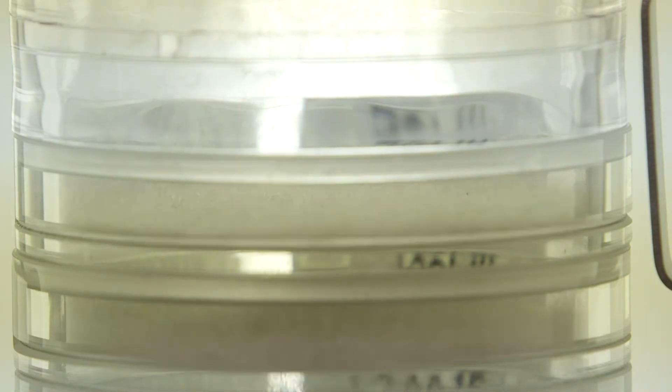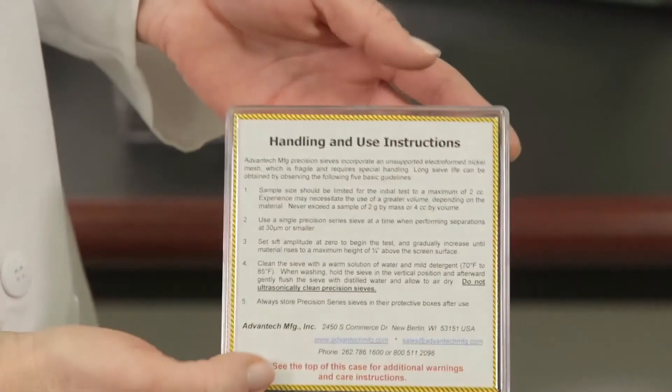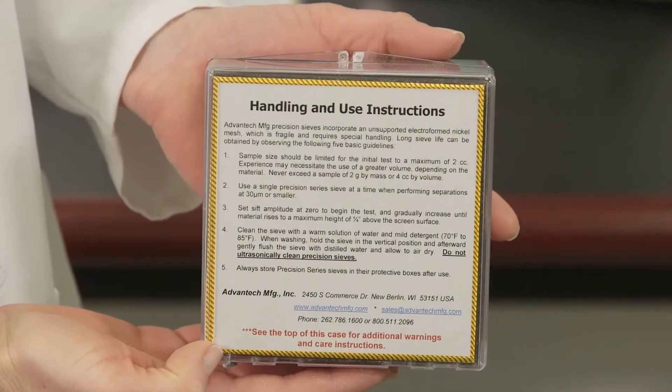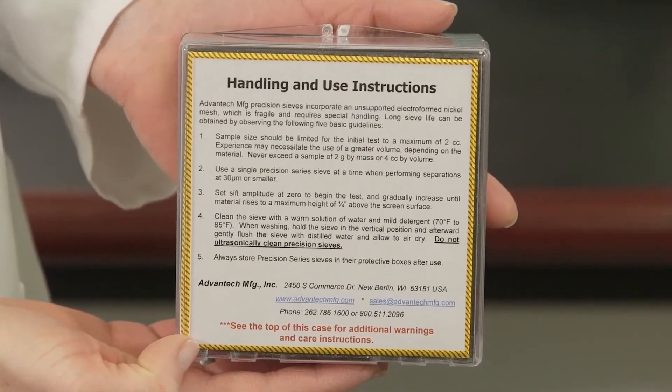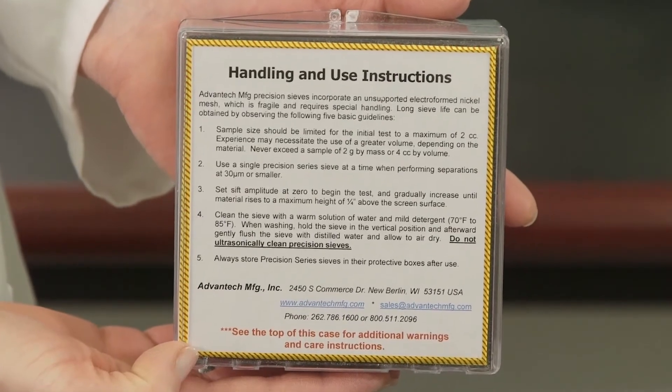Slowly increase the amplitude while observing your sample through the transparent sieve frames. The optimum amplitude has been reached when the largest particles are rolling on the sieve surface and no particles are arcing higher than half the height of the sieve frame.